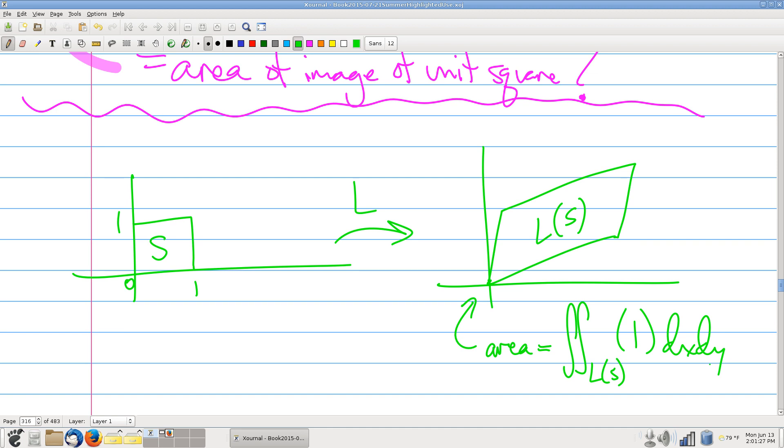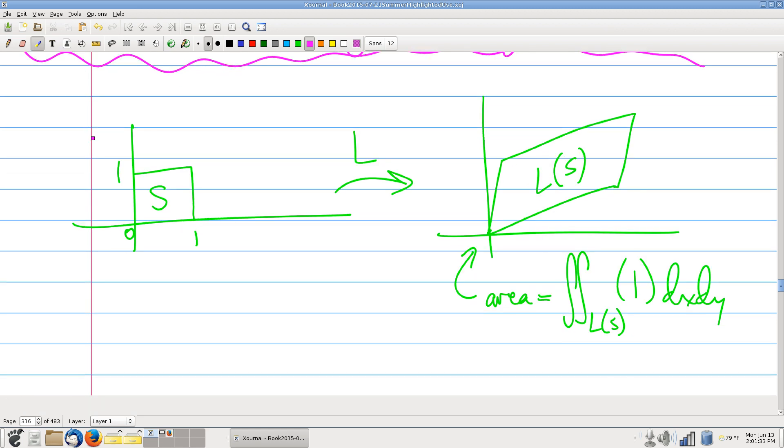And as before, oops, I ran out of space. Did I? Where am I? Okay, good. As before, I can think of this, do a pullback through my change of variables function. And I can rewrite this as, well, it's a double integral over the unit square itself. Same integrand. But don't forget we have to worry about stretching factors.